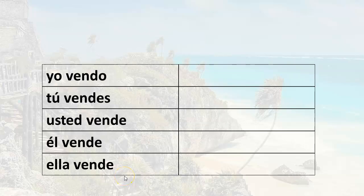So in this lesson, we're going to learn how to ask questions with the verb vender in the present tense. These are yes or no questions. The simple way to do it is to use inversion — place the conjugated verb first, followed by the subject pronoun, and then you have your question.